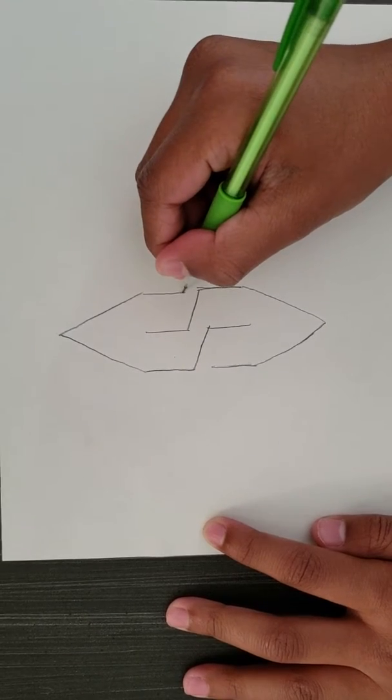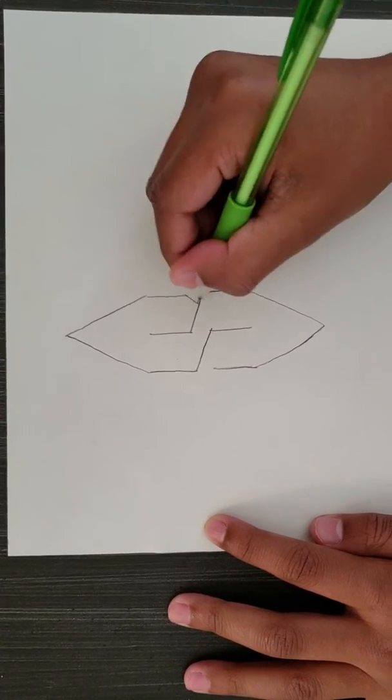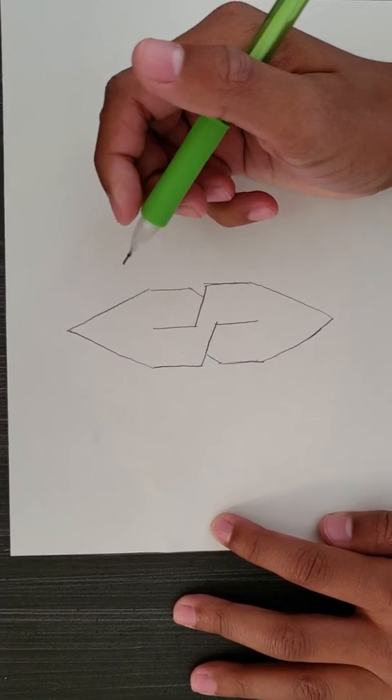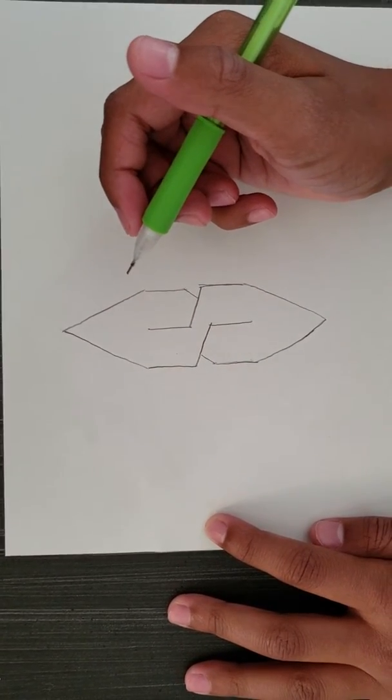Next what you're going to do is you're going to take this line, connect it with a little slant. You're going to do the same with this one. And voila, there you go. You got your Super S.